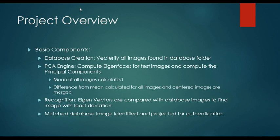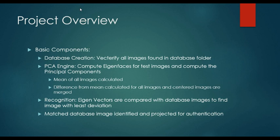The basic components, as seen in the MATLAB code, are: first, the database creation, which vectorifies all images found in the database folder. Next, the PCA engine — the principal component analysis engine — computes the eigenfaces and principal components by computing the mean of all images, the deviation from the mean, and merging centered images with those deviations. The third component is the recognition module, where eigenfaces for the new test image are computed and compared with the database image eigenvector vectors to find the image with the least deviation. The matched database image is then identified and projected for authentication.